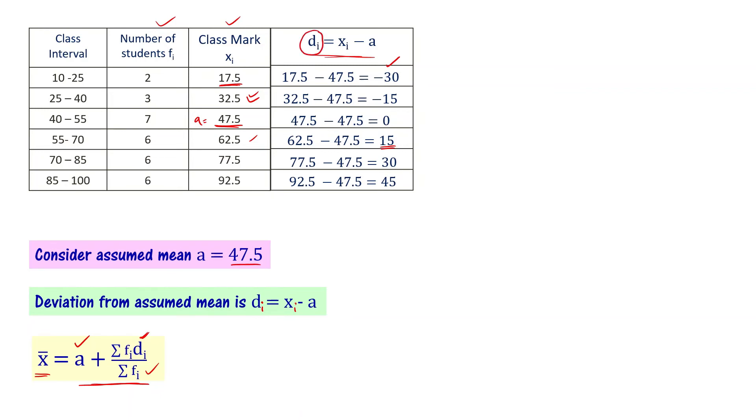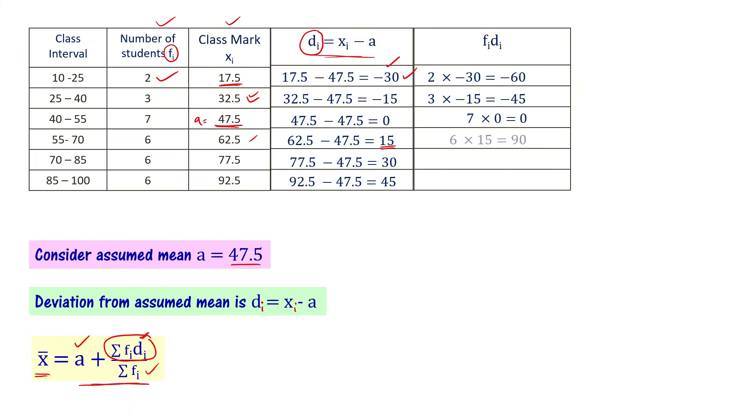Now we have the di values and fi values. For the numerator, we need Σfidi. Let's calculate fi times di: 2 times -30, then 3 times -15, then 7 times 0, 6 times 15, 6 times 30, 6 times 45.